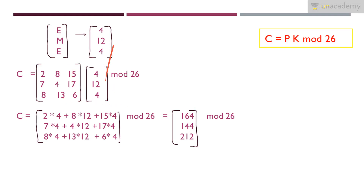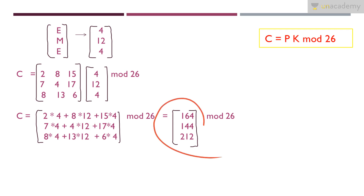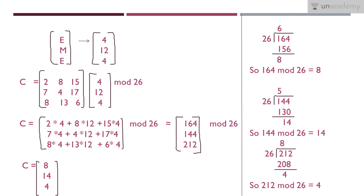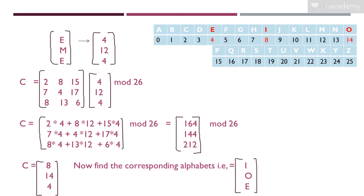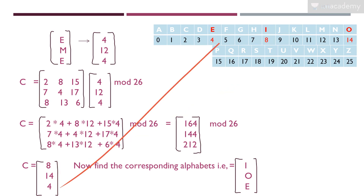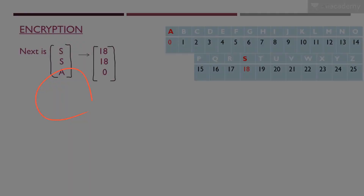Applying the key matrix to [4, 12, 4]: first row gives 2×4 + 8×12 + 15×4, second row gives 7×4 + 4×12 + 17×4, third row gives 8×4 + 13×12 + 6×4. After computing and applying mod 26, we get the results. Converting to alphabet: 8=I, 14=O, 4=E. So EME is encrypted to IOE.